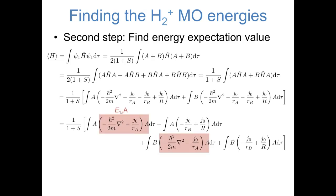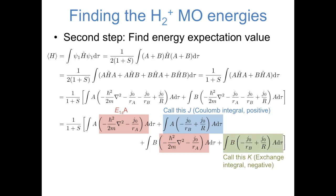The reason we split up our expression in this way is that we know the values of some parts of this. The terms highlighted in red are just atomic Hamiltonian operators applied to atomic orbital A, and we know from the Schrodinger equation that each of those is just equal to the energy of a hydrogen 1s orbital times the orbital. The other integrals are more difficult to solve, but we can give them names. The integral highlighted in blue is called a Coulomb integral, and it has a positive value—we'll call it capital J. The integral highlighted in green is called an exchange integral. At typical bond distances it's negative, and we'll call it capital K.